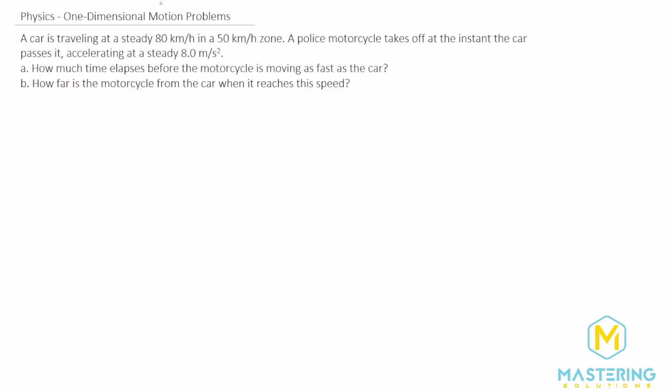Welcome to Mastering Solutions. In this problem, a car is traveling at 80 kilometers per hour in a 50 kilometer per hour zone. A police officer takes off as soon as the car passes, accelerating at 8 meters per second squared to pull it over. For part A, we need to figure out how much time elapsed before the motorcycle is moving as fast as the car. For part B, we need to figure out how far the motorcycle is from the car when it reaches that speed.